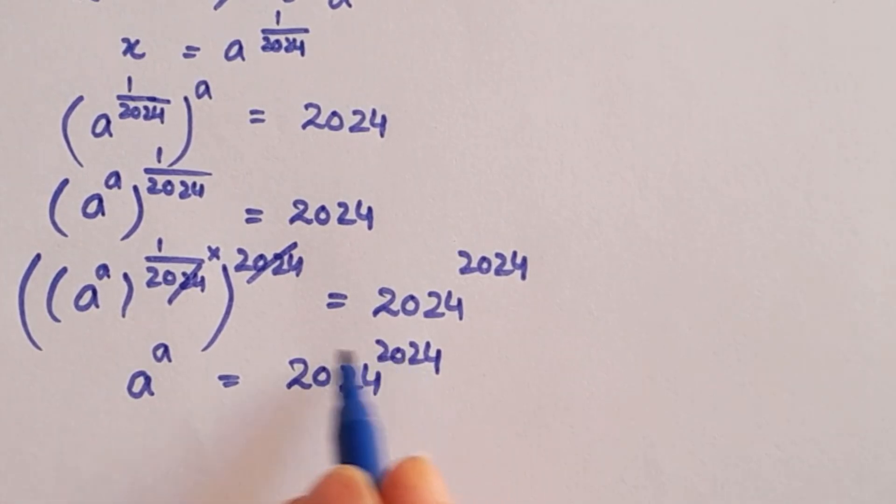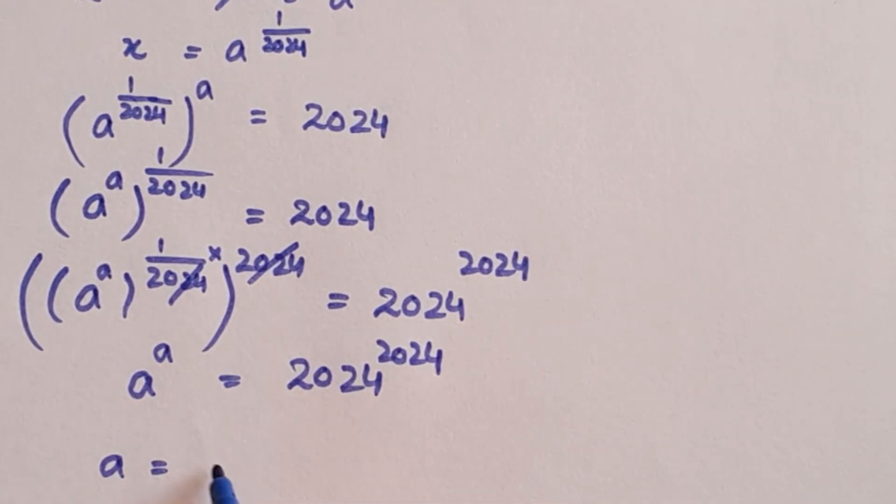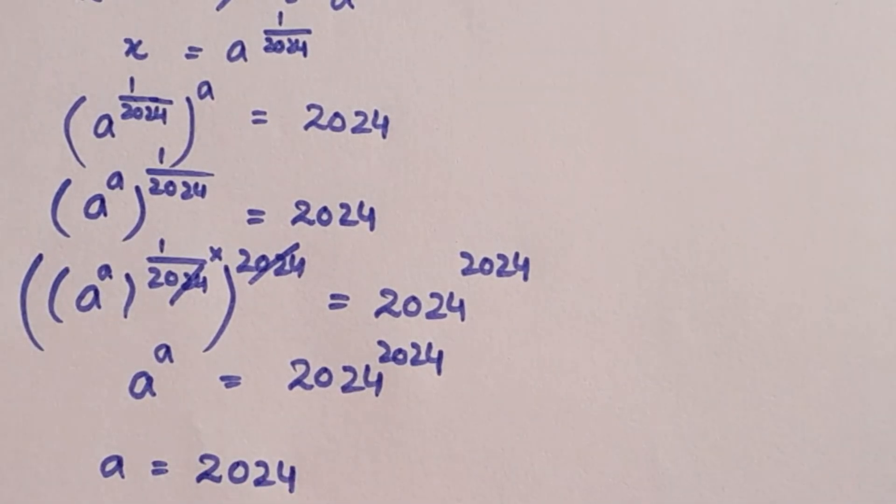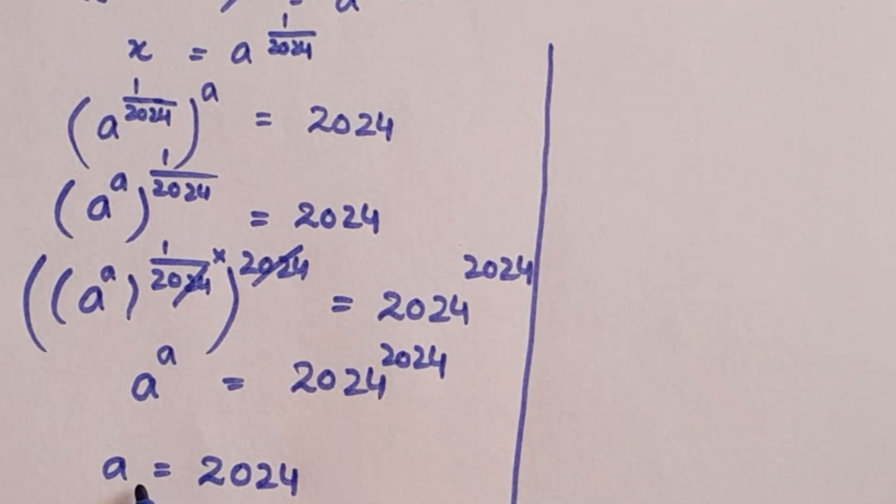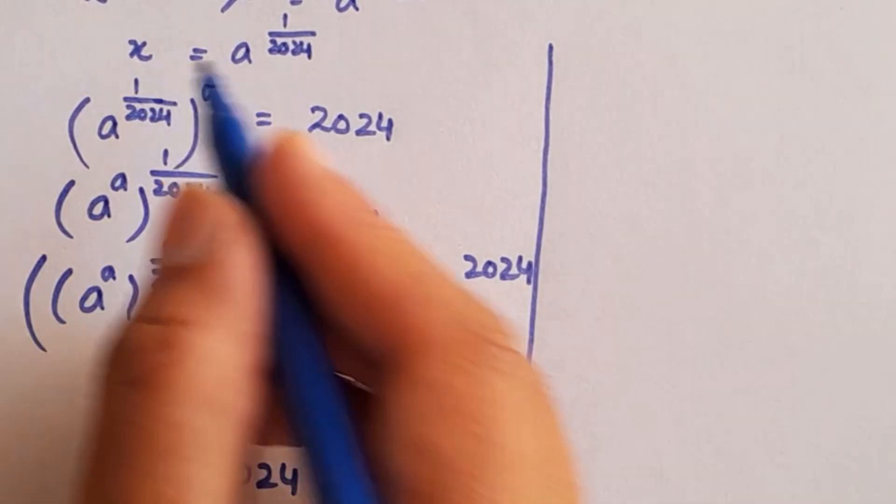Here we can equate the bases or the powers. We will get the same answer: a equals 2024. But this is the value of a and we have to get the value of x. Putting this value of a in the equation.